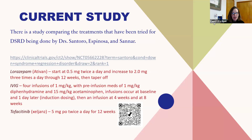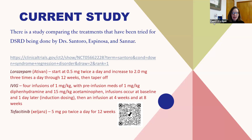Currently there is a study comparing treatments that have been tried for DSRD, being done by Dr. Santoro, Espinoza, and Sanar from Children's Hospital of Los Angeles, Global Down Syndrome Foundation in Denver, and Denver Children's Hospital. It is comparing Ativan — the benzodiazepine — to IVIG to a JAK inhibitor, tofacitinib or Zeljanz. They are still recruiting for this study, and you can go to the QR code to learn more. They have recruited quite a few people but want more.